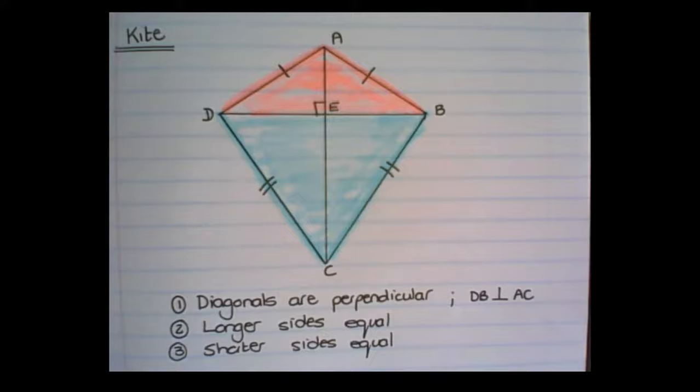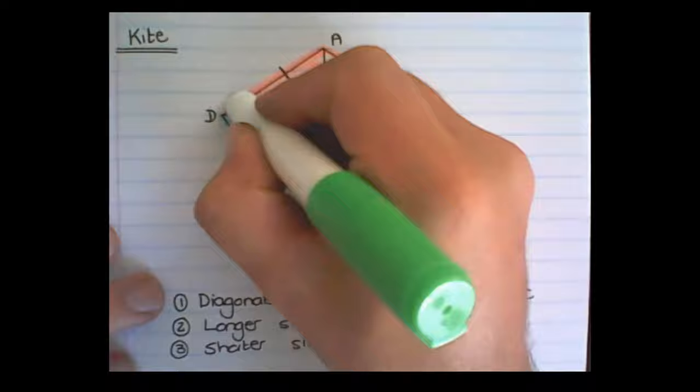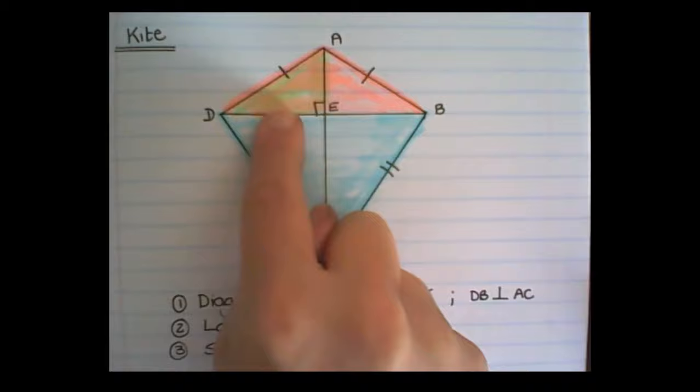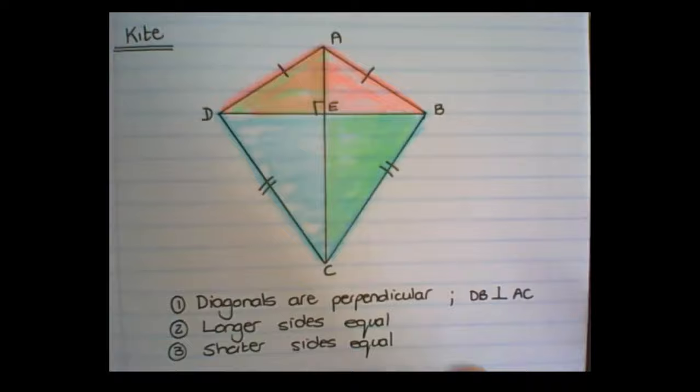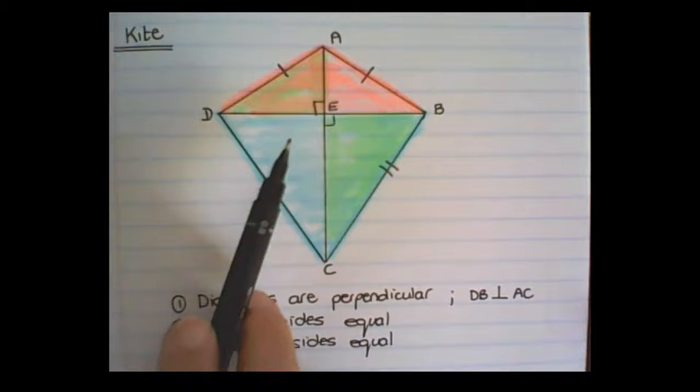Another strong feature of a kite is that we can use Pythagoras to solve for the sides or lengths of sides in the kite. I can apply Pythagoras here because this angle is vertically opposite from that one, and therefore also equal to 90 degrees.